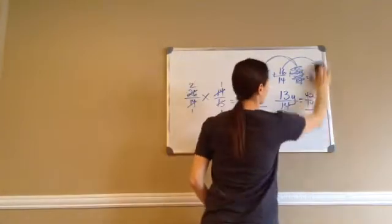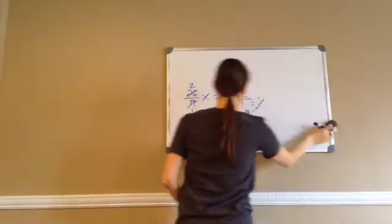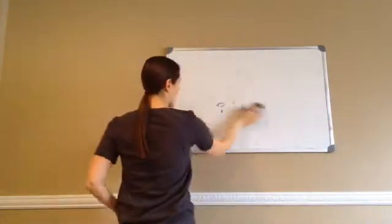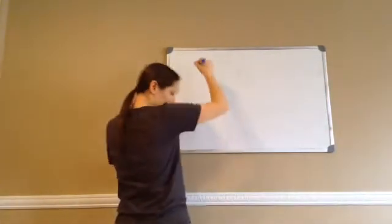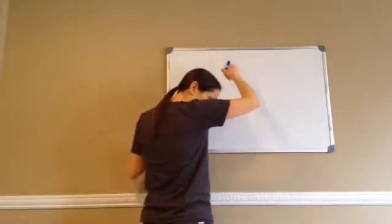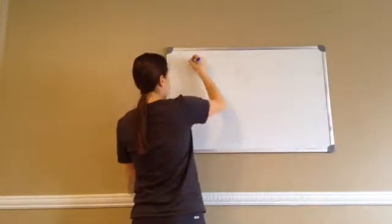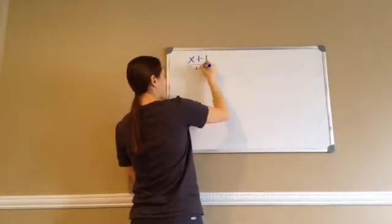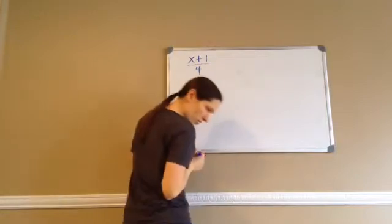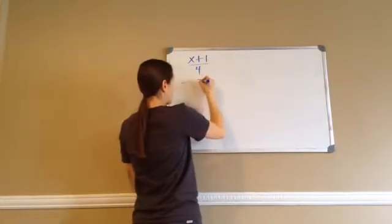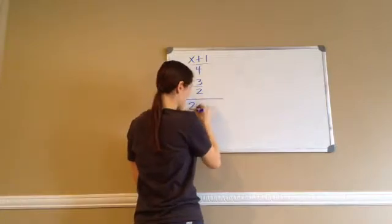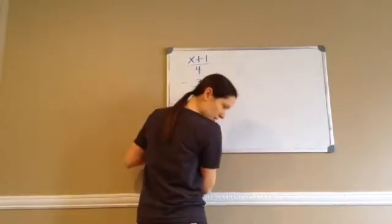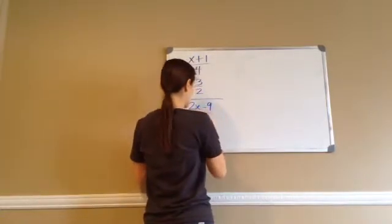Let's go ahead and do one more of those and we'll be done with the lesson — just make sure you're getting it. You can even slow down the video and rewind if you need to. This is 78.4: x plus 1 divided by 4, minus 3/2, equals 2x minus 9 over 10.